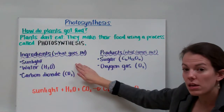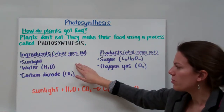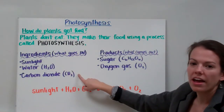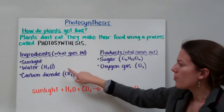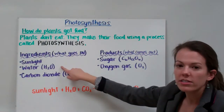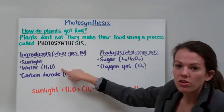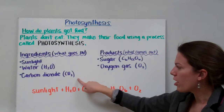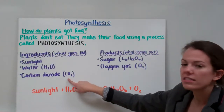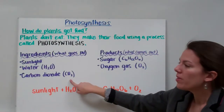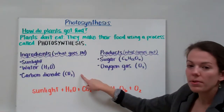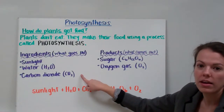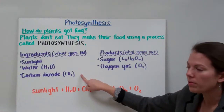Three things go in for photosynthesis — we have three ingredients: sunlight, water, and carbon dioxide. Remember our scientific notation for water is H2O, and for carbon dioxide it's CO2. You need to have sunlight, water, and carbon dioxide in order to make the food for plants.